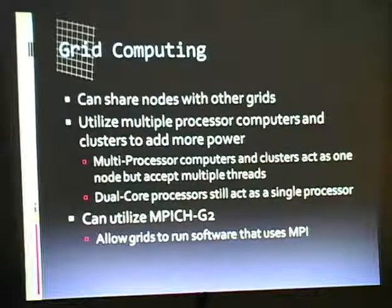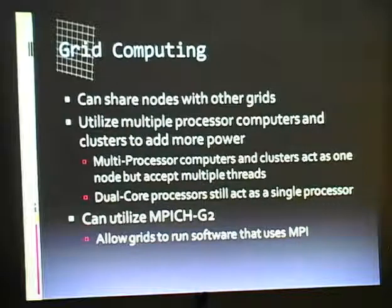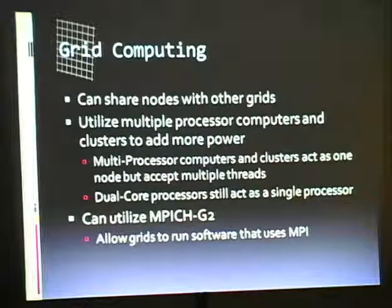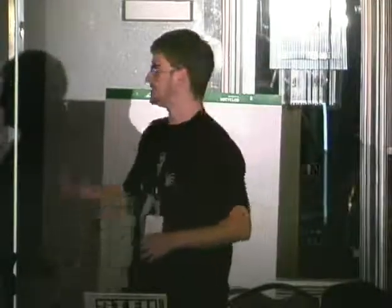You can utilize multiple processors as well as clusters in a grid. If you have a supercomputer with 500 processors, you can hook that up as an individual node within your grid, and instead of getting one thread, it gets one thread per processor — so 500 threads at a time. One thing not built into any grid platform currently is dual core support, because it's a newer technology. A dual core processor is still recognized as one single processor within your node.